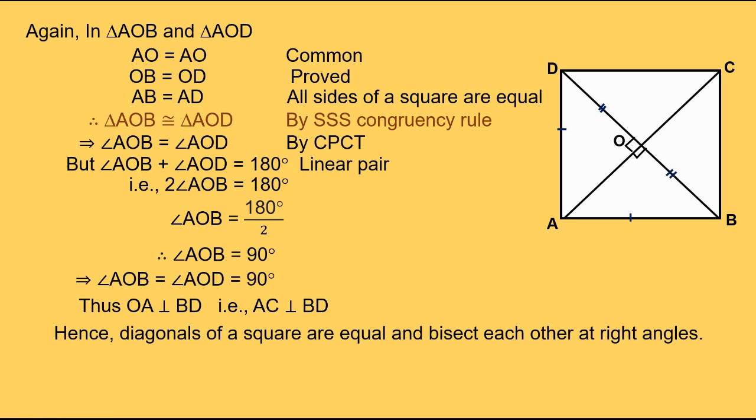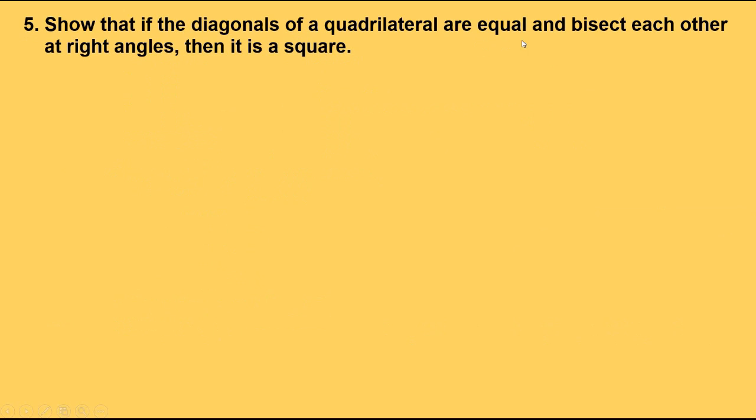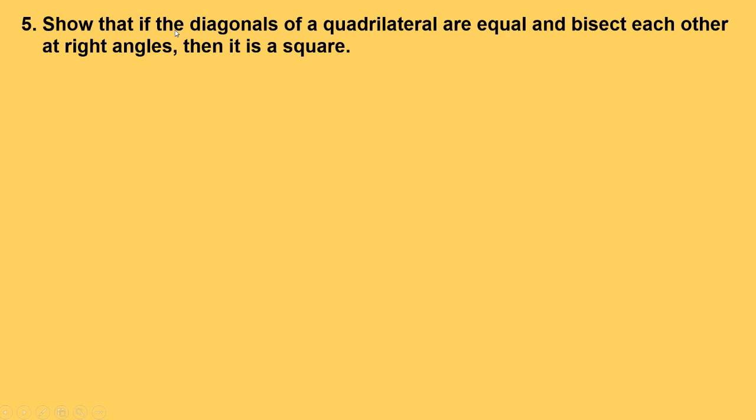Now let's look into the fifth problem. Show that if the diagonals of a quadrilateral are equal and bisect each other at right angles, then it is a square. This is the reverse question of the previous one. Here we need to show that in a quadrilateral, if the diagonals are equal and bisect each other at right angles, then the quadrilateral is a square.